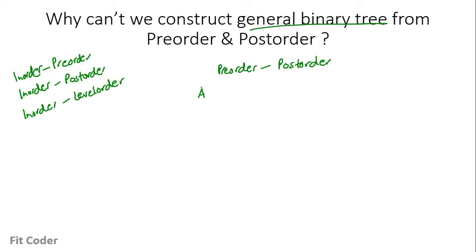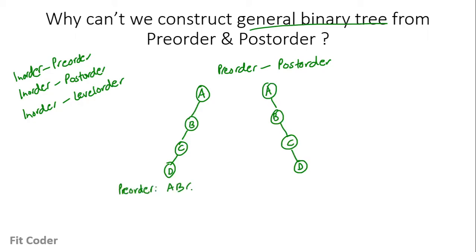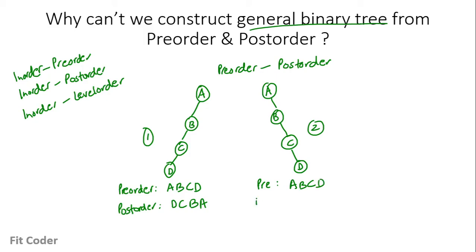Let's take these three examples. If we write the pre-order for the first tree, it is ABCD and post-order is DCBA. For the second tree, pre-order is also ABCD and post-order is DCBA. So for both these trees, pre- and post-order is the same. So we cannot construct a unique general binary tree if we are given only pre-order and post-order.